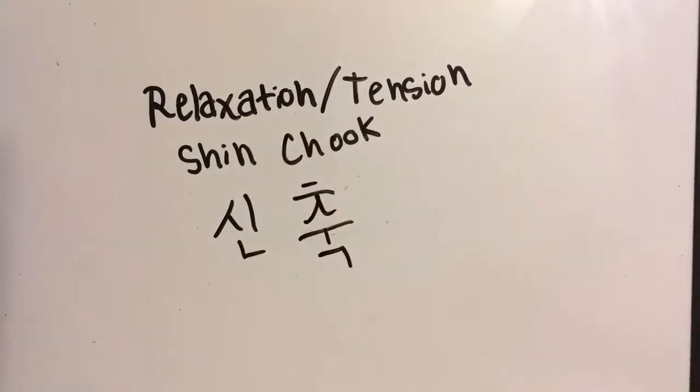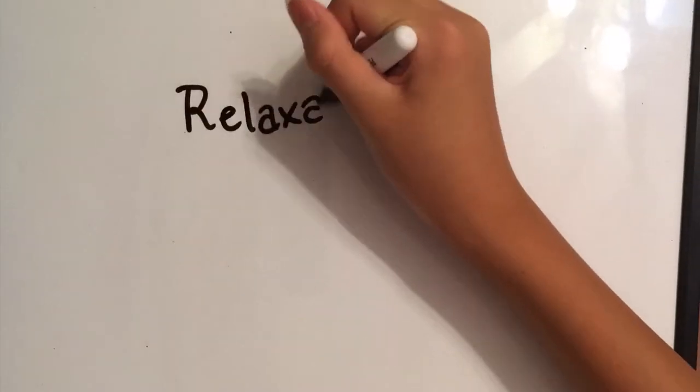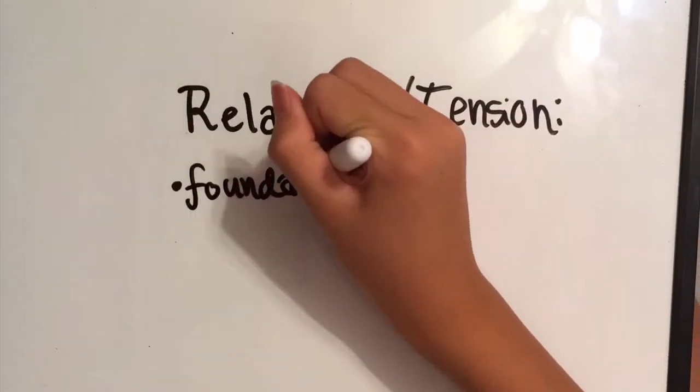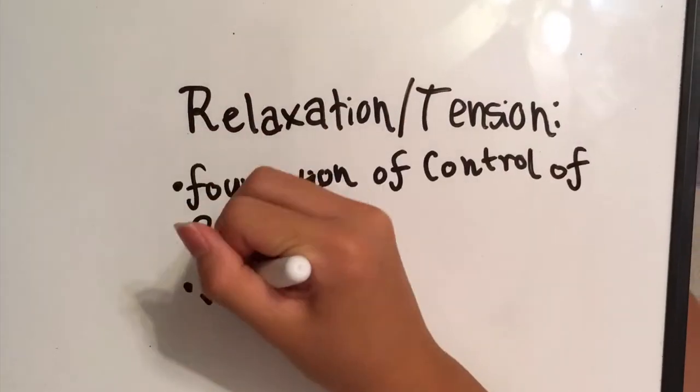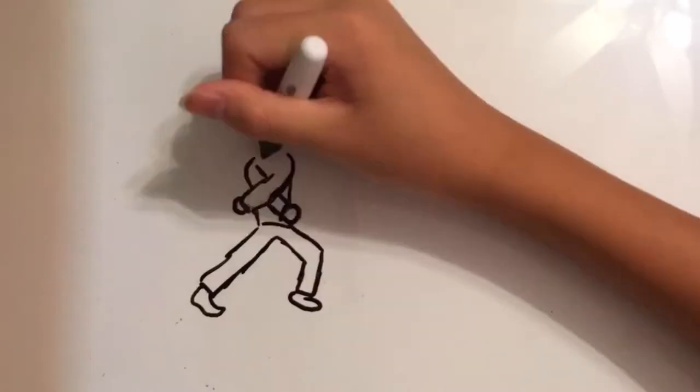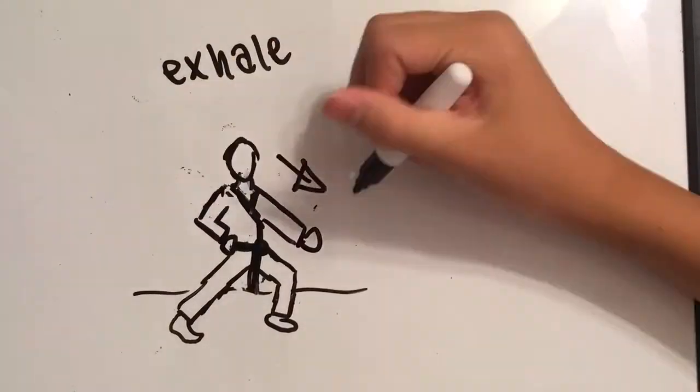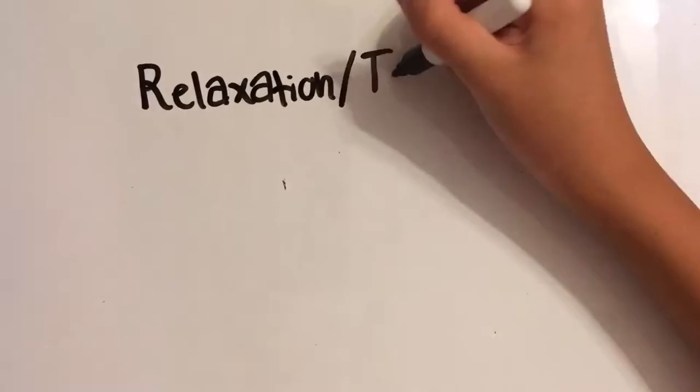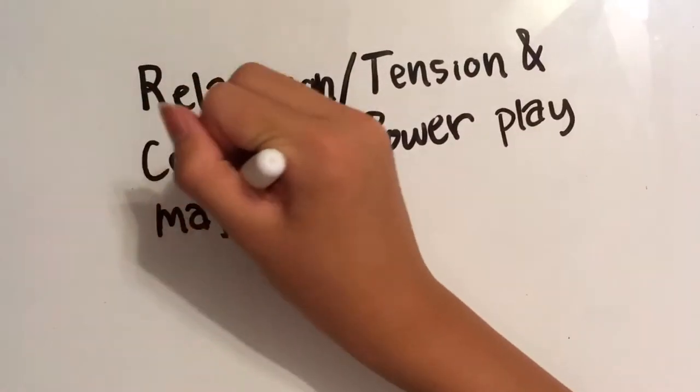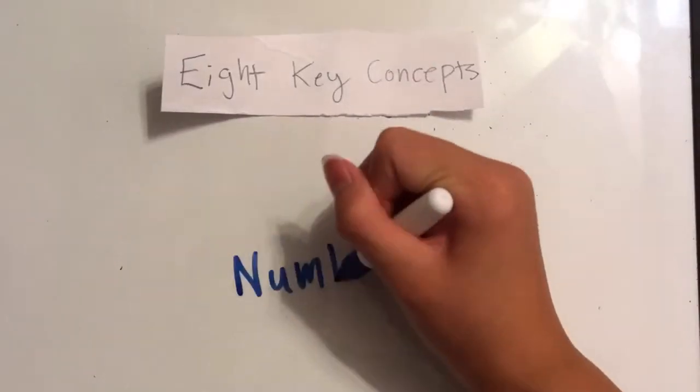Relaxation/tension is the foundation of control of power. A big part of relaxation and tension is our breath. Externally, the inhale is associated with physical contraction, and the exhale is associated with physical expansion. Relaxation/tension and control of power play major roles in earning more self-control. Number eight,